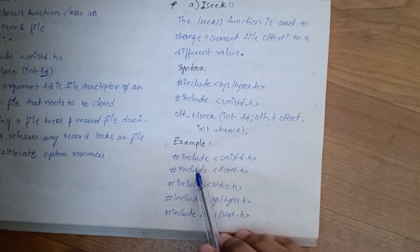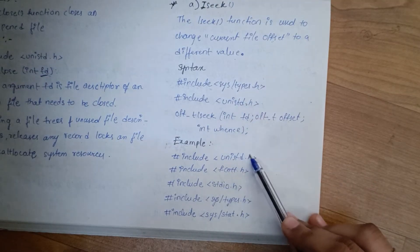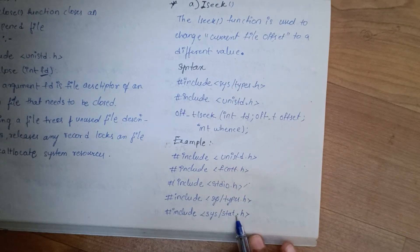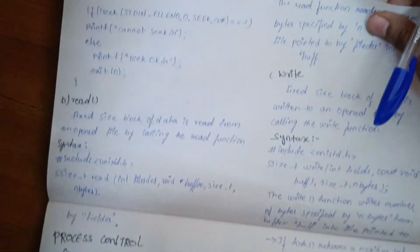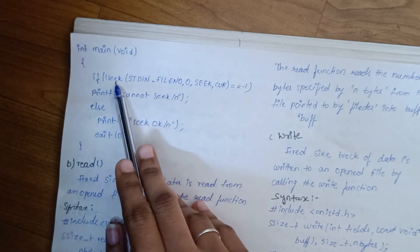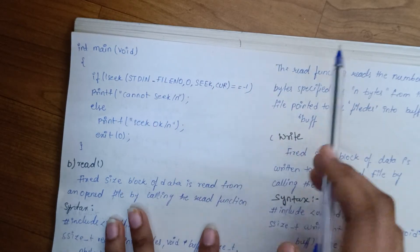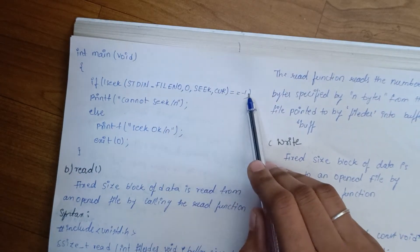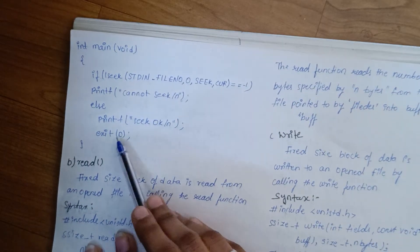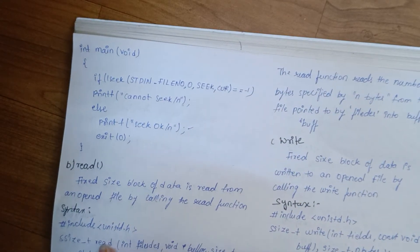Now we do the lseek example. We hash include unistd.h, declare the file and variables in main void. We call lseek, and if the return value equals minus 1, we print 'Cannot seek'. Then we call exit. This is the example of lseek.